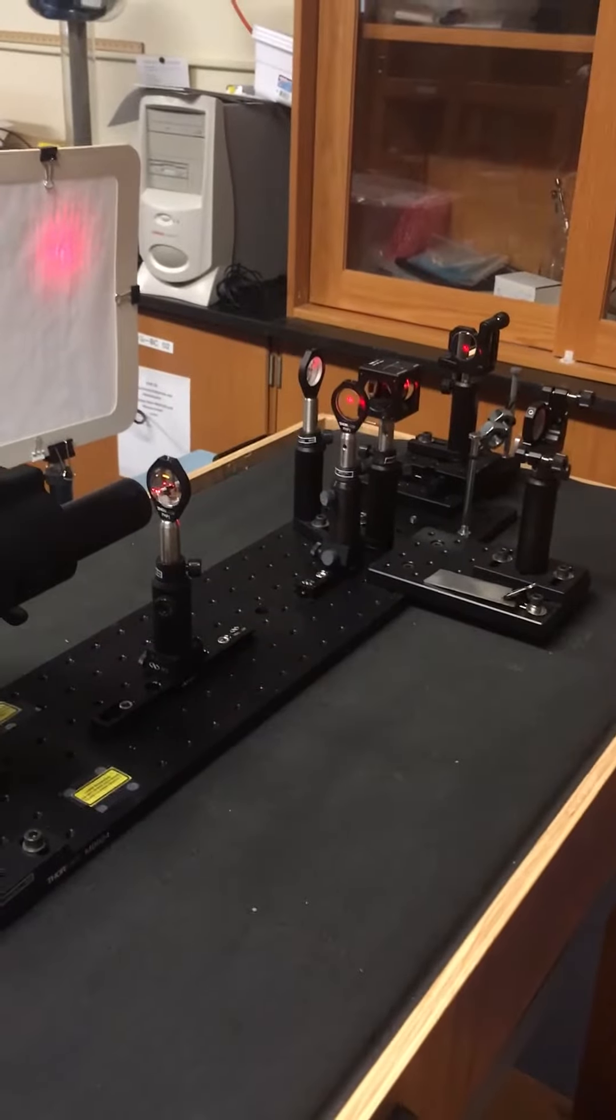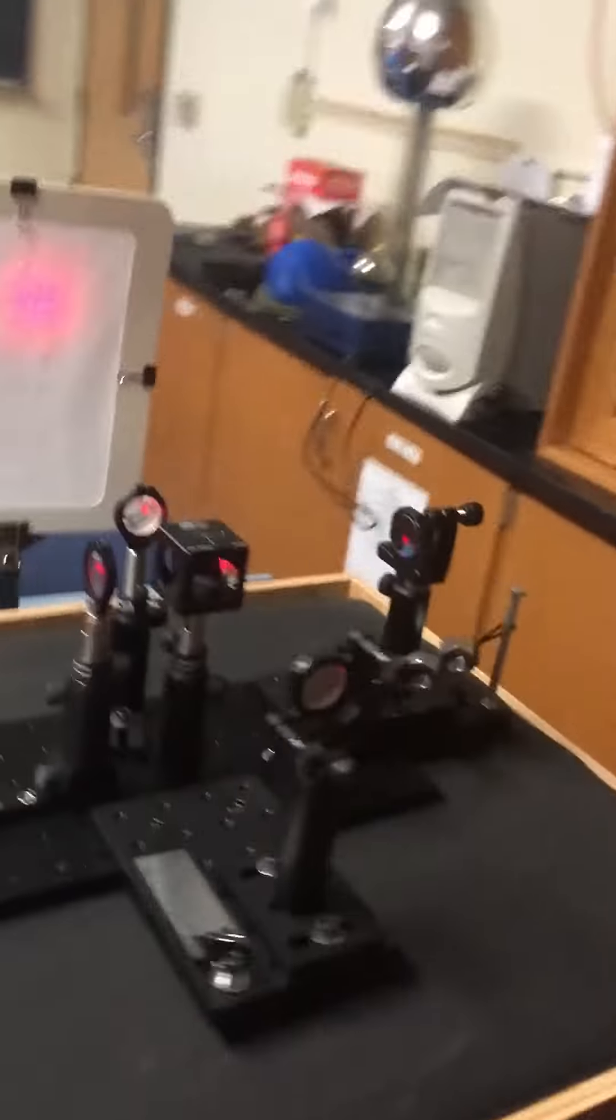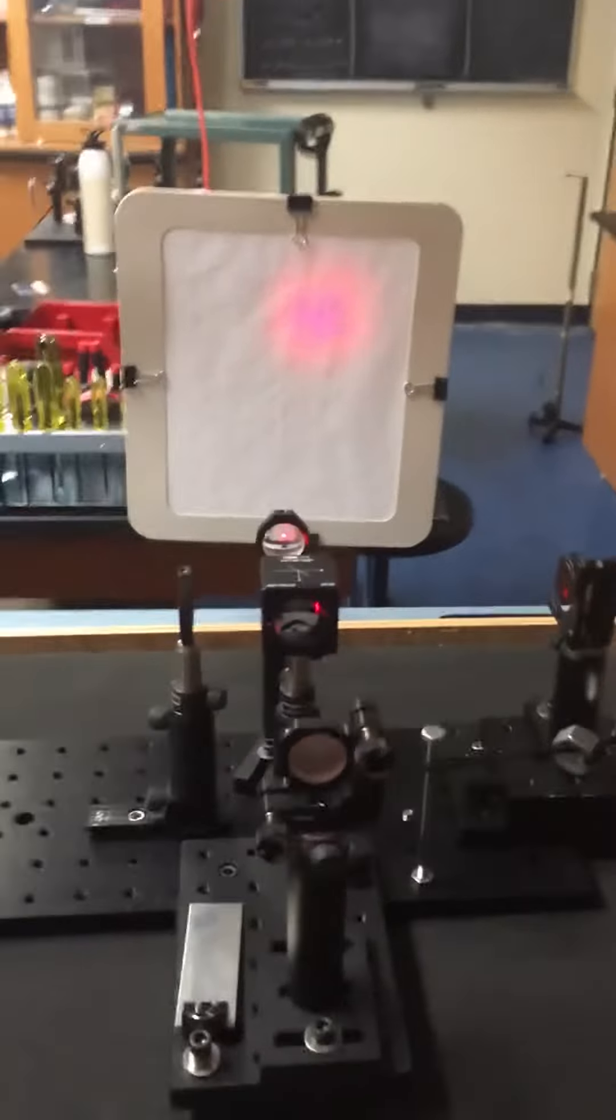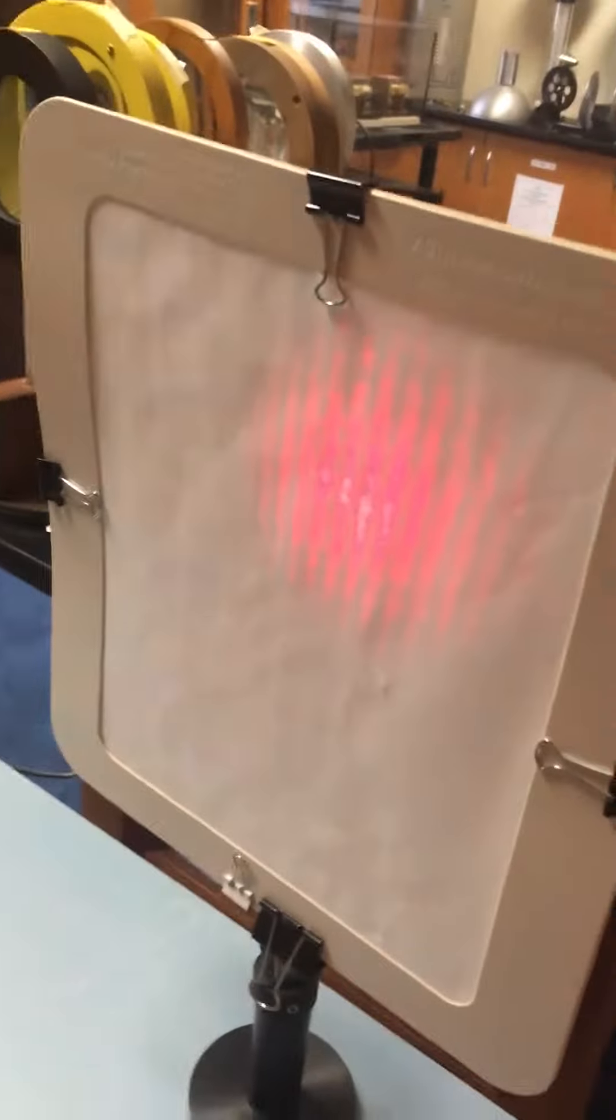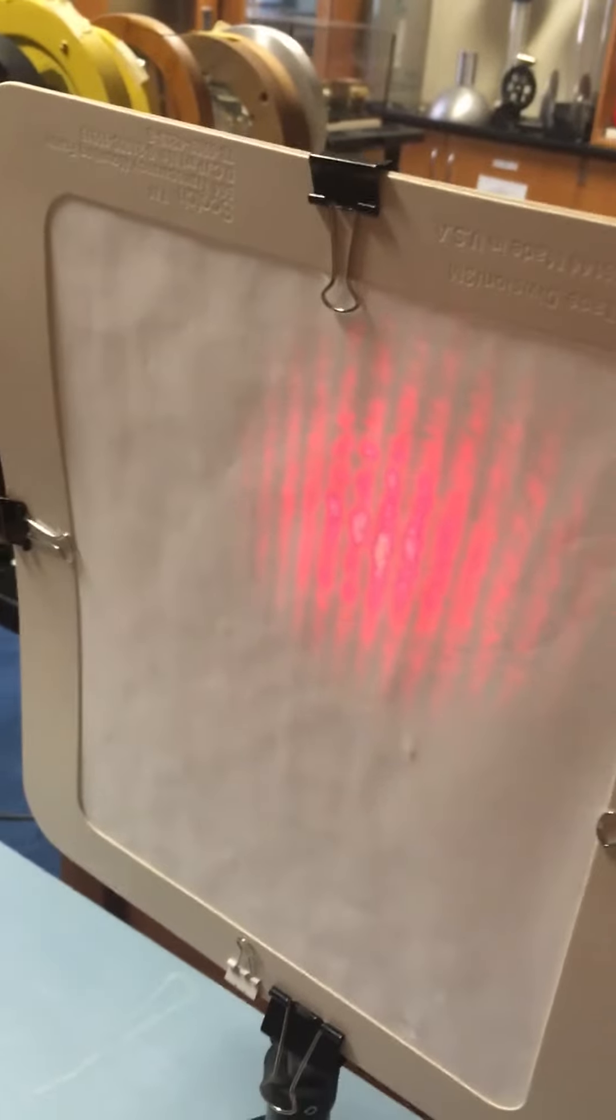And then you can see that the laser is shining through the system. And we even have a screen to show the interferometry pattern. So we have some constructive and destructive interference fringes.